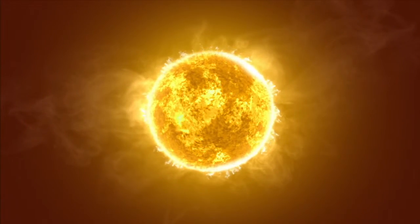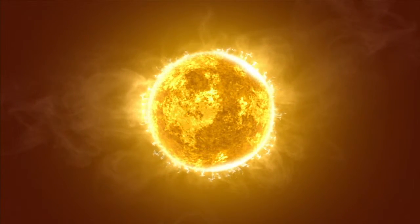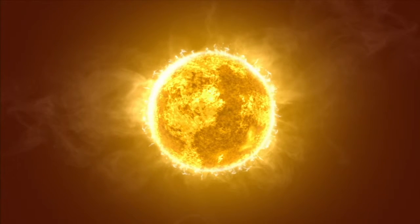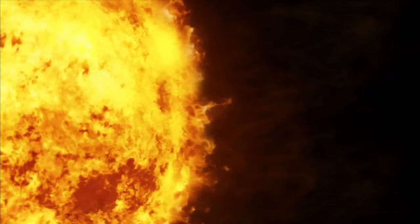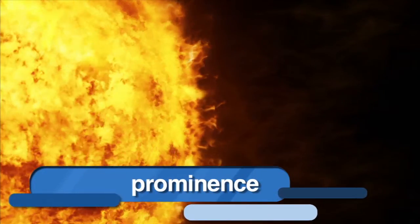If you could get close to the Sun, you would notice that the Sun looks a lot like a large burning flame. Sometimes, huge tongues of gases shoot out from the Sun's surface. They're called prominences.